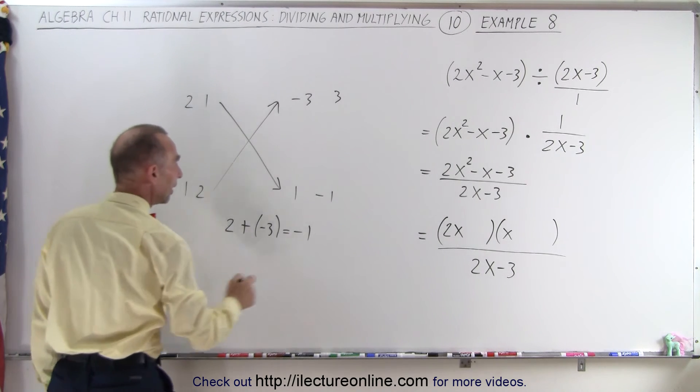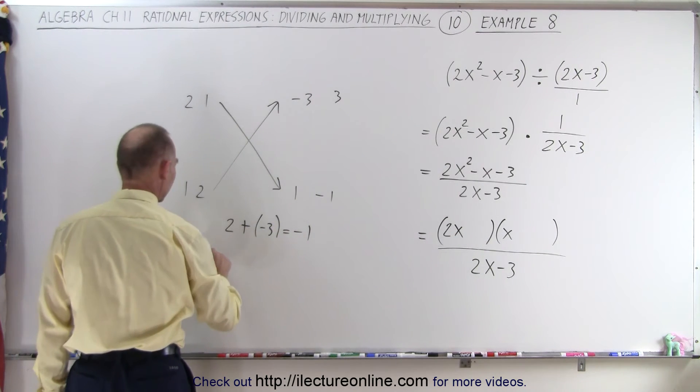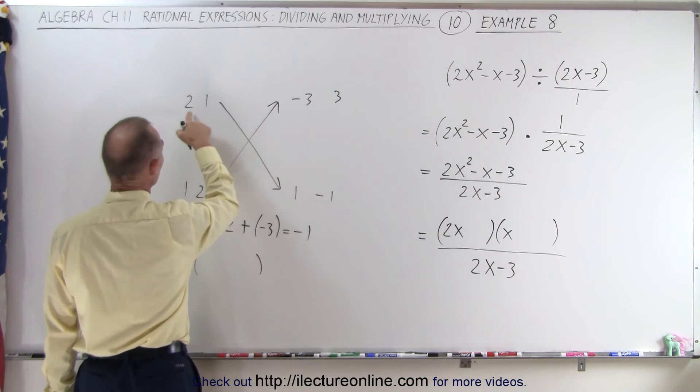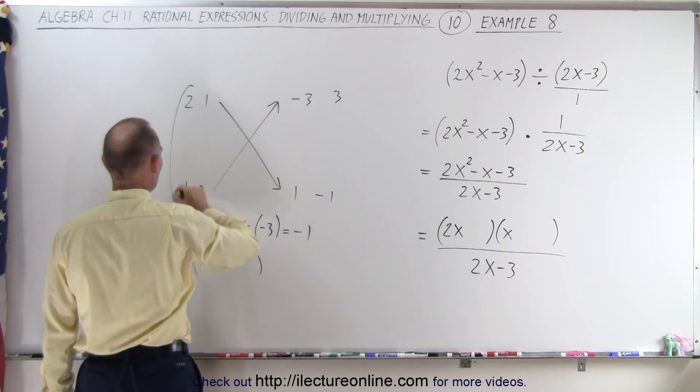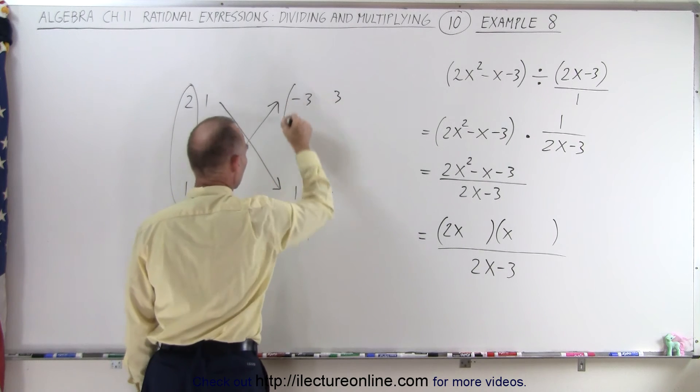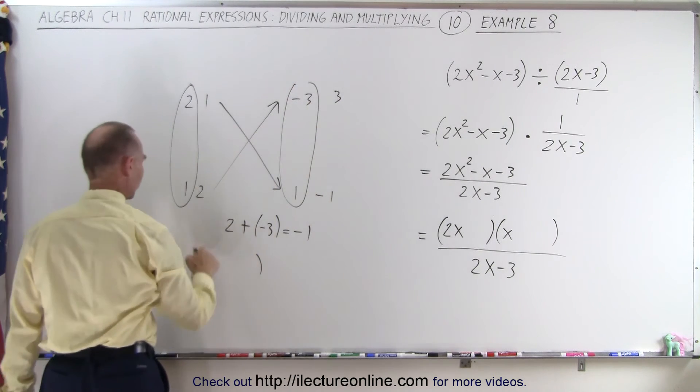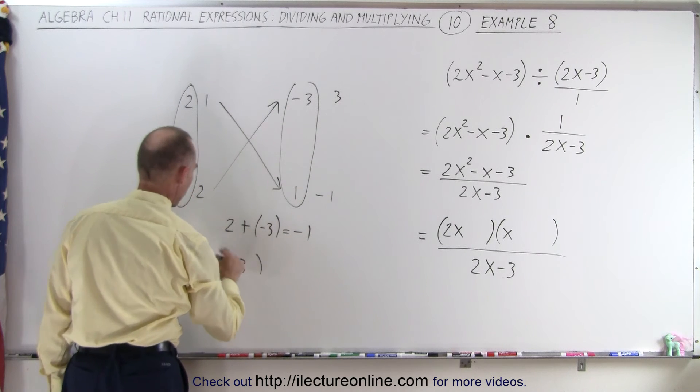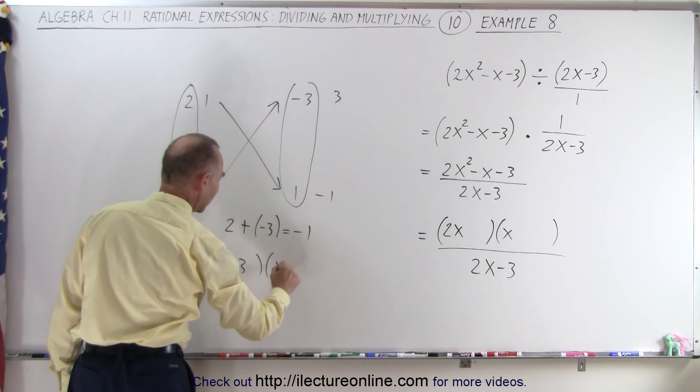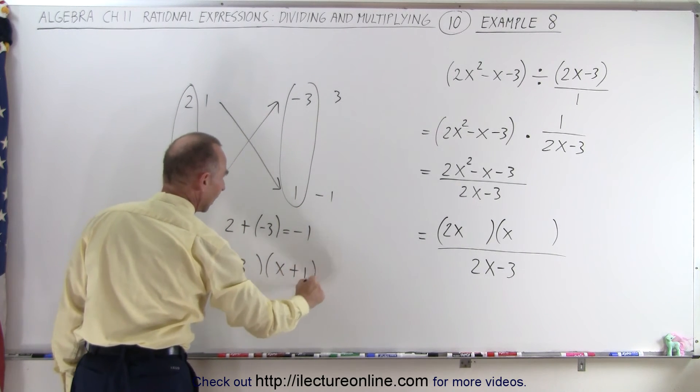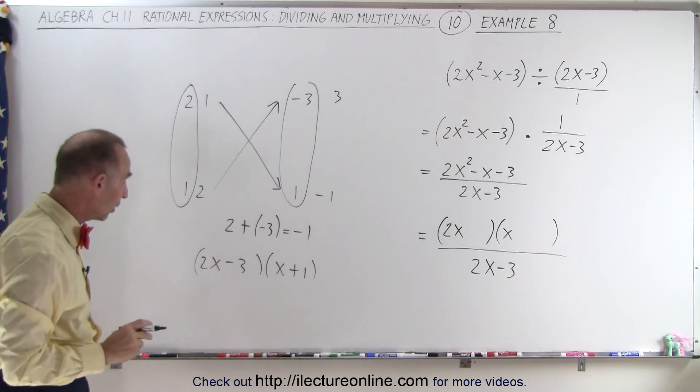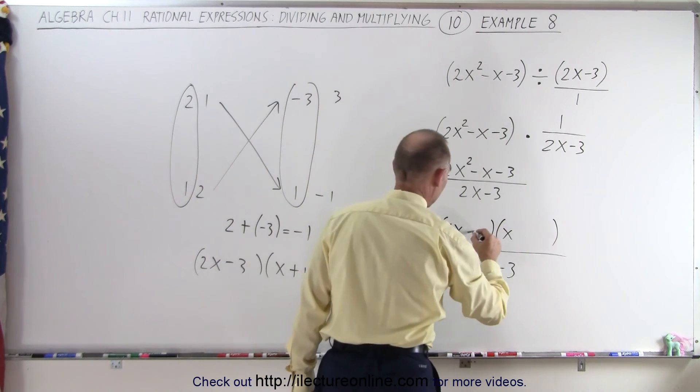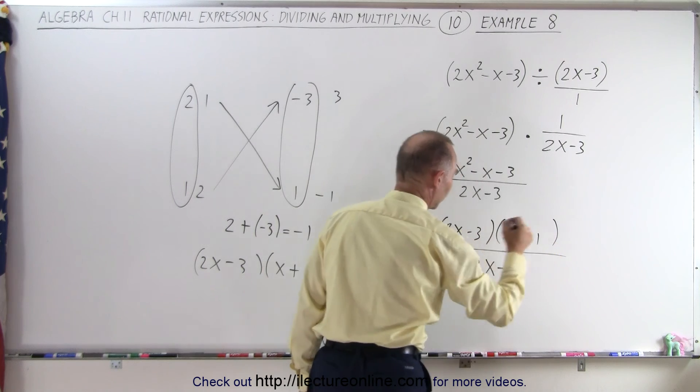So that means that the two binomials will look like this. So on the first binomial, we get a 2x. So what we did here is we used these two numbers and we used these two numbers. So the first binomial will be a 2x minus 3, and the second binomial will be an x and a plus 1. And so that's how we get the other two numbers. So we have a 2x minus 3 and an x plus 1.